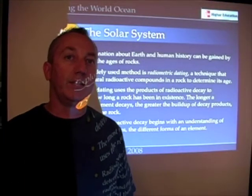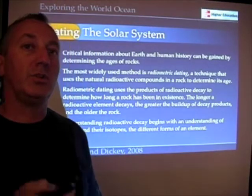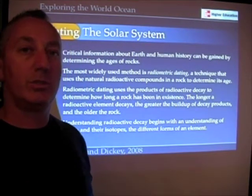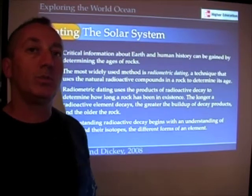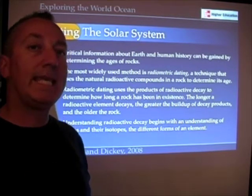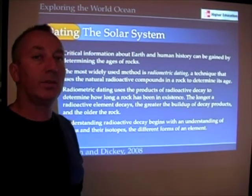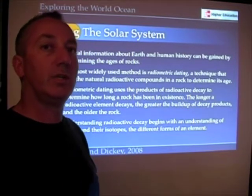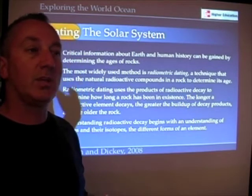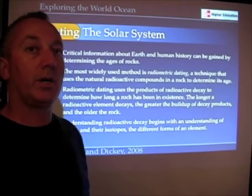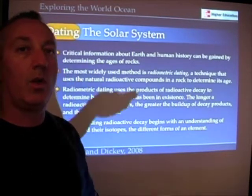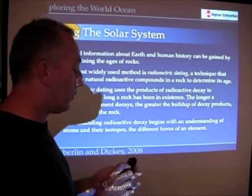A little side note concerns how scientists know about the processes by which the solar system formed. One subject that we'll keep coming back to this semester is how scientists determine the ages of things, particularly rocks, because it's that geologic history that gives us a timeline for certain events and constrains what is possible and what's not possible in thinking about how the evolution of Earth and the oceans came about.